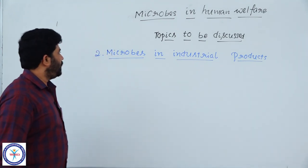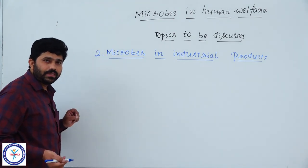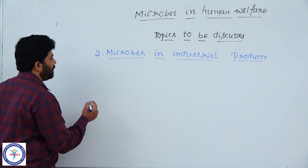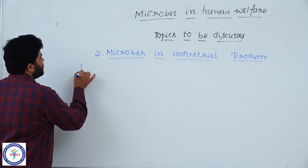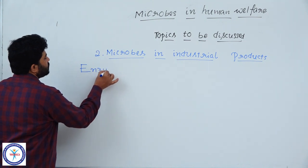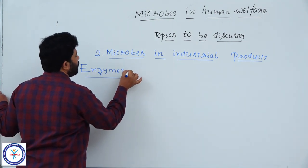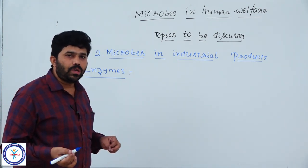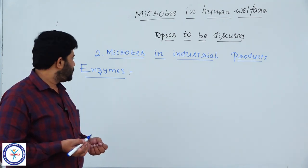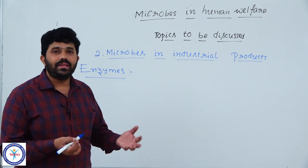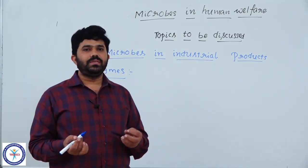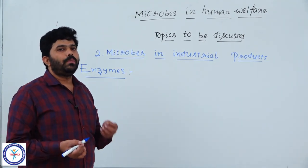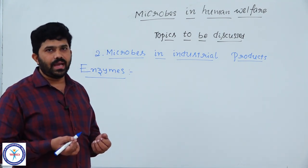We are not only using microbes for the production of antibiotics and alcohol — we also use them for other products like enzymes. You know the importance of enzymes — enzymes are very important chemical substances that play a pivotal role in our regular metabolic functions, and they are also used for so many laboratory purposes. The kinds of enzymes produced from microorganisms and their functions are important to understand.